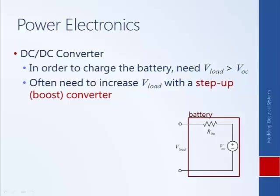Another example of where a boost converter could be used is that it enables the electric traction motor in an electric vehicle — which tends to be high voltage — to be powered by a lower voltage battery. Having a lower voltage battery allows the battery to be smaller and lighter, and its output is just stepped up using a boost converter to a sufficient level to drive the electric motor.